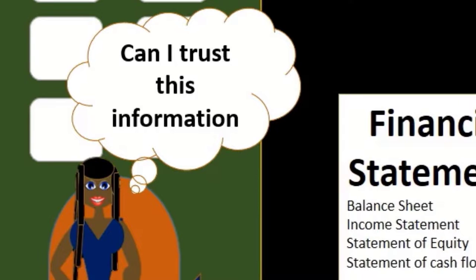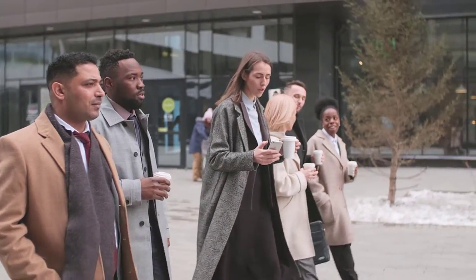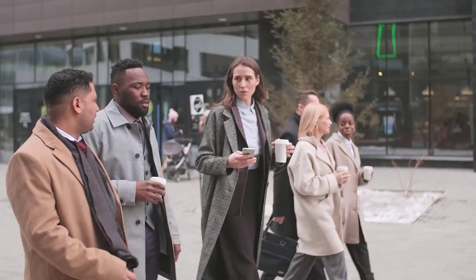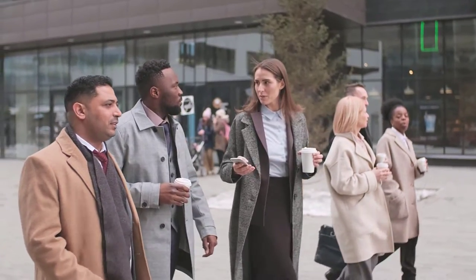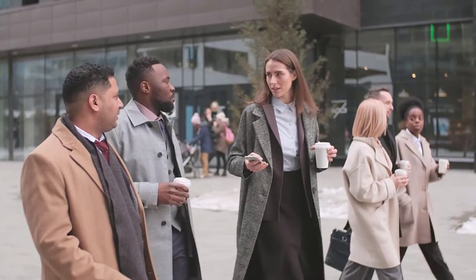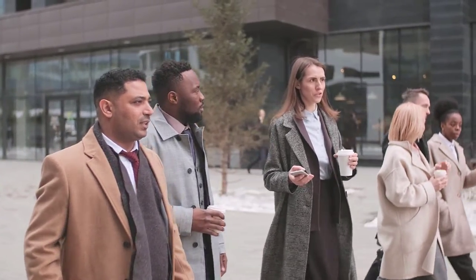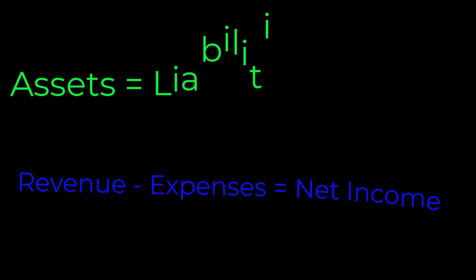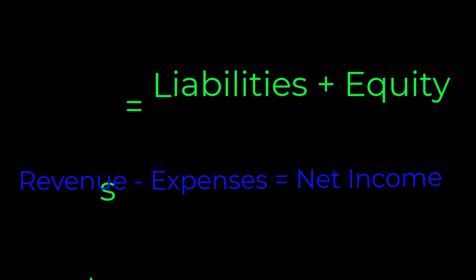A couple of things the bank could do to have more trust: one is the standardization of the financial statements. The fact that financial statements are made in a standard format — we expect a balance sheet to be in the format of a balance sheet and an income statement in the format of an income statement — is one thing the bank could use to have some security and assurance that the financial statements are correct.